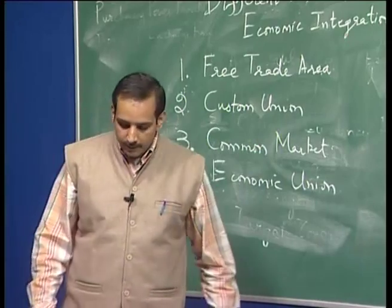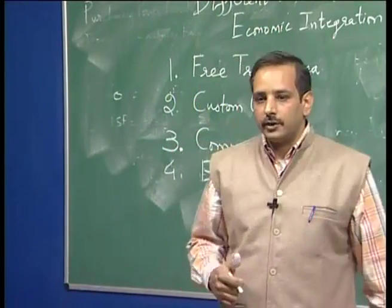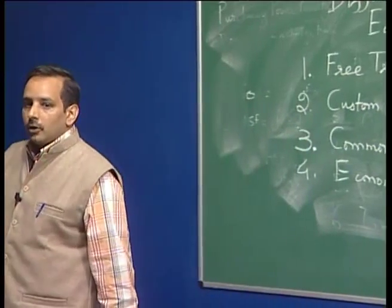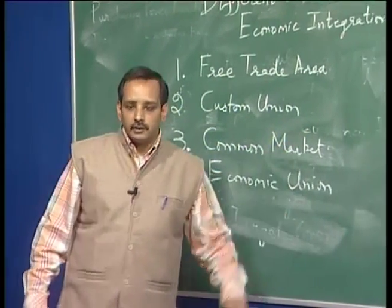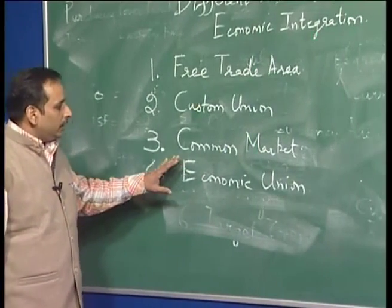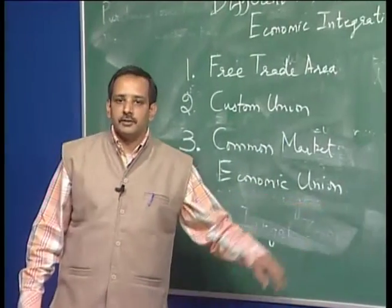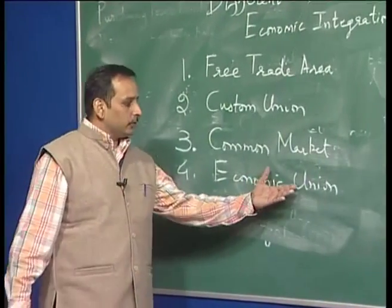In the common market, you not only have zero tariffs for each country's goods and a common external tariff, but there is also a free flow of goods and services. In the economic union, you not only have a common market but also common economic policies among countries. What Europeans have achieved as 27 member countries is the economic union — they have common economic policies among themselves.